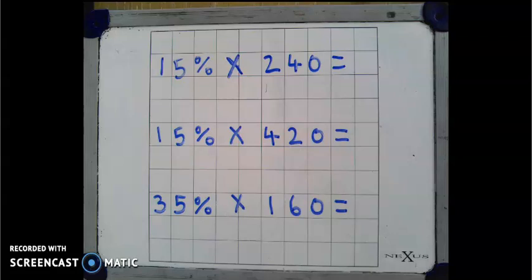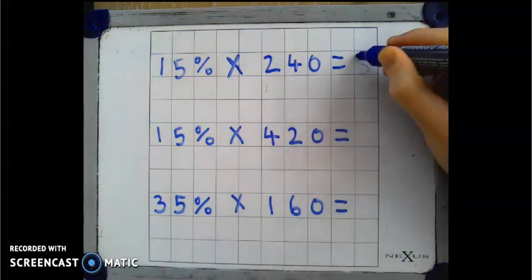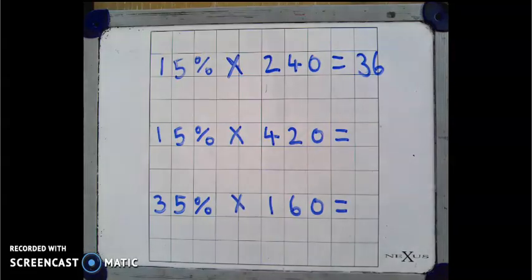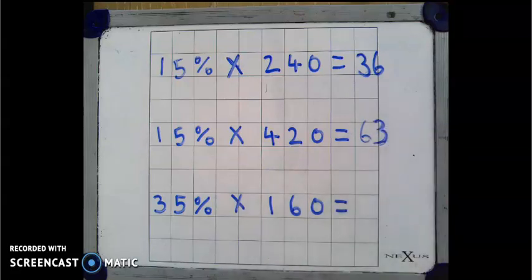Here are three similar calculations for you to practice with. Pause the video now, have a go at solving them, and then unpause to check your answers. Here come the answers. 15% of 240 is 36. 15% of 420 is 63. And 35% of 160 is 56.